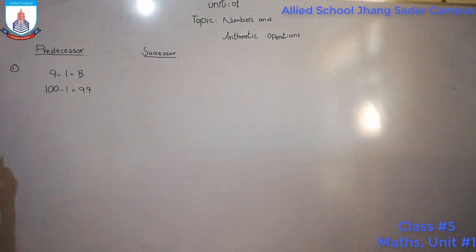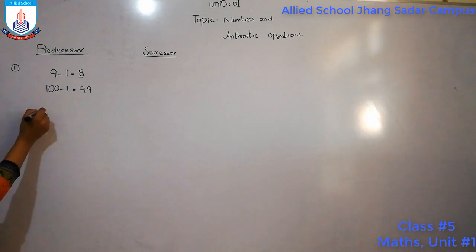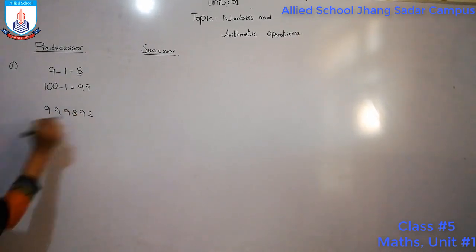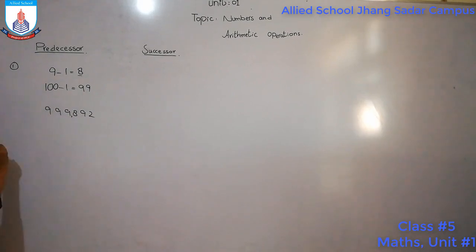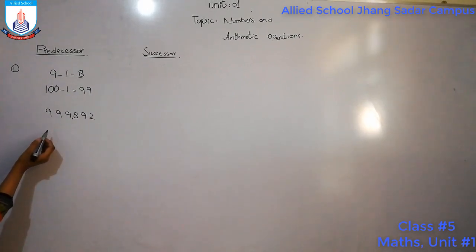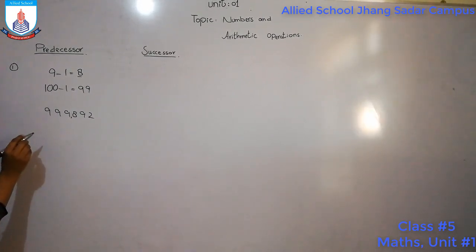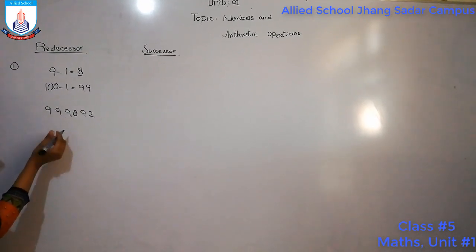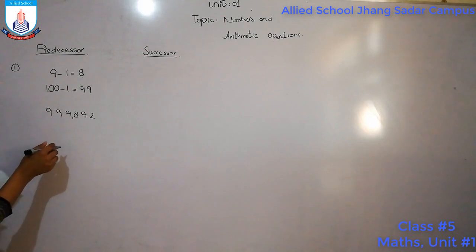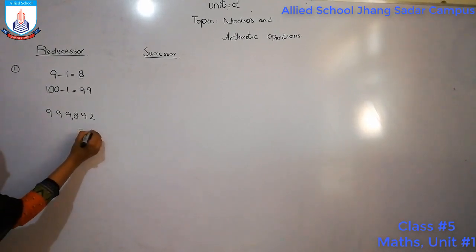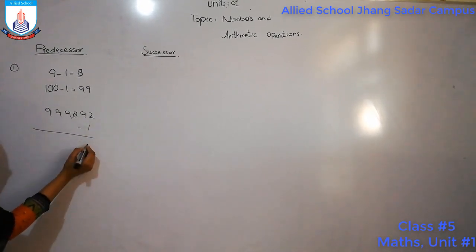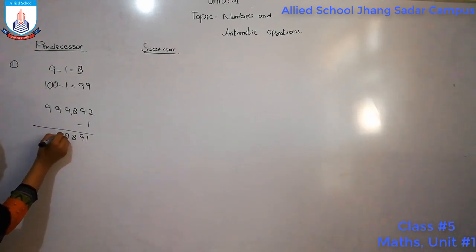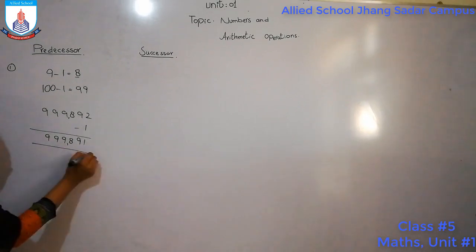Similarly, when we have much larger numbers, we have to follow the same procedure. We will not work out the answer directly for large numbers. We will follow the procedure and then subtract. For example, 2 minus 1 is 1, then 9 stays the same, then 8, then 7. The rest of the digits remain totally the same.